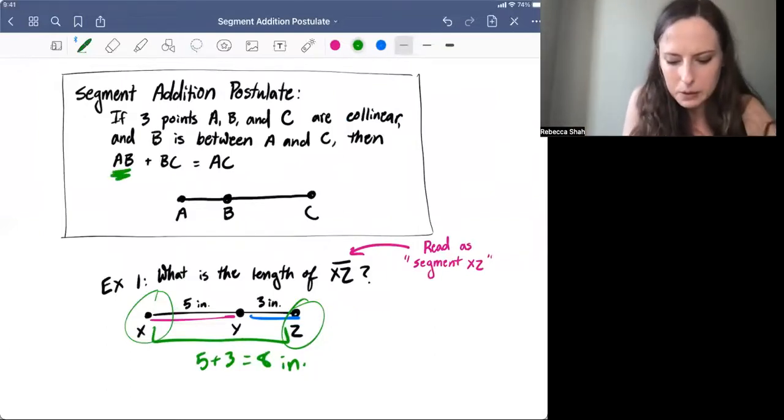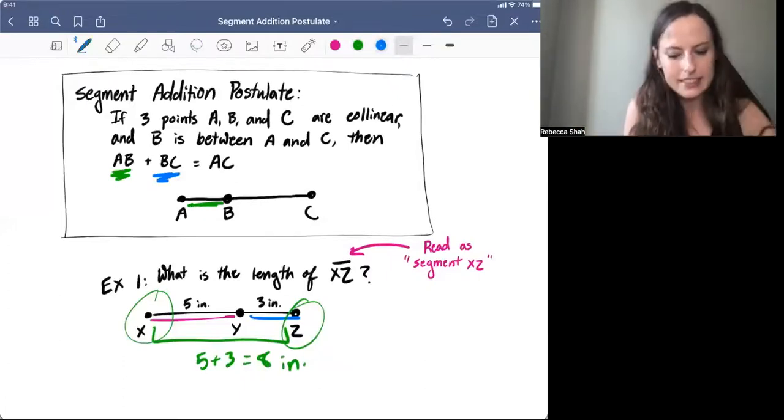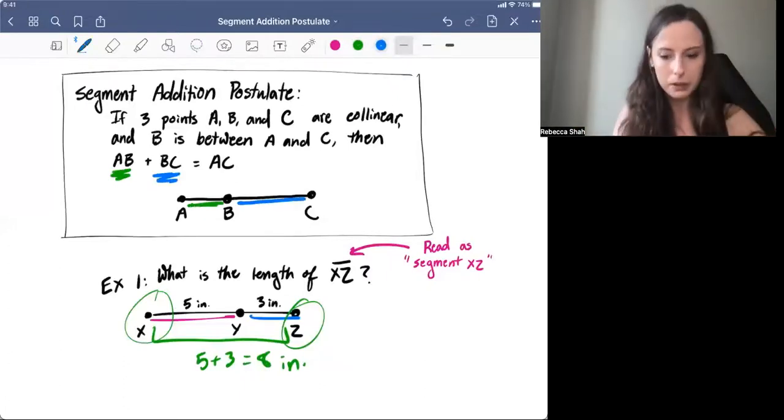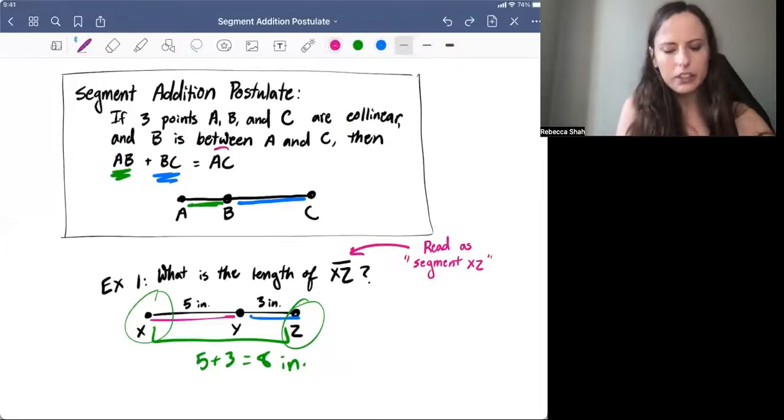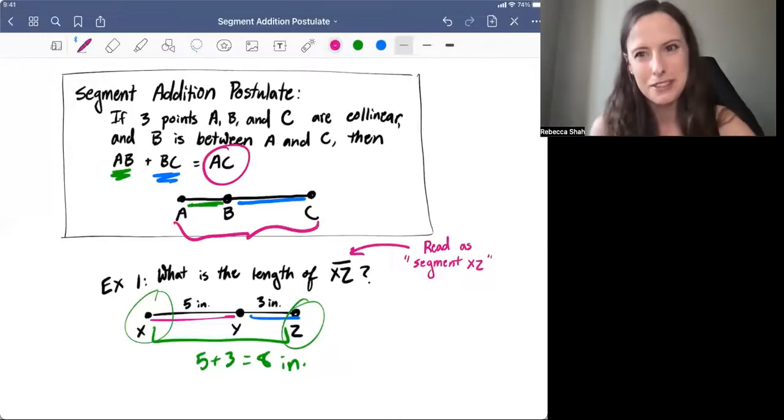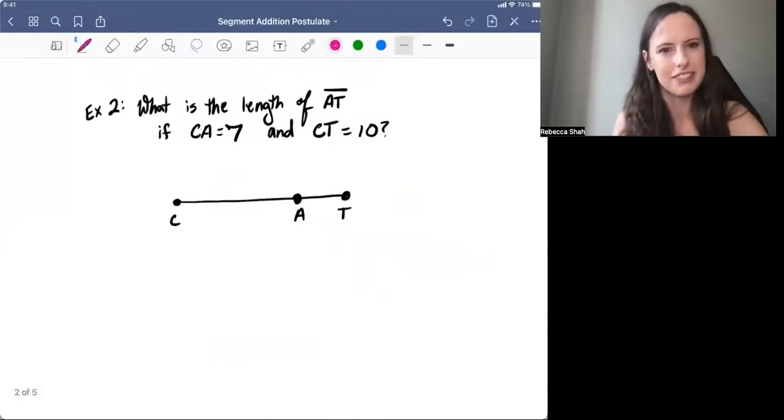So let's just make sure we're clear on what this says. That first segment, AB, that's going to be one of the parts or the smaller segments. The second one, BC, that's another part or smaller part. And then when you add those two together, it gives you a larger segment, which is quite literally the sum of the two. So now that we've got that, let's see an example of this.